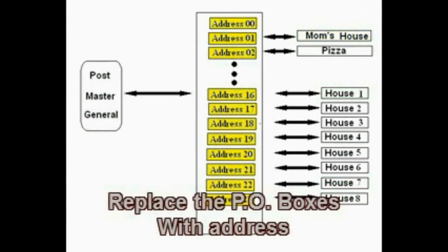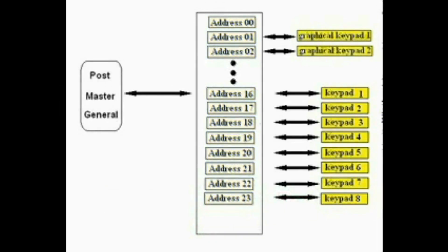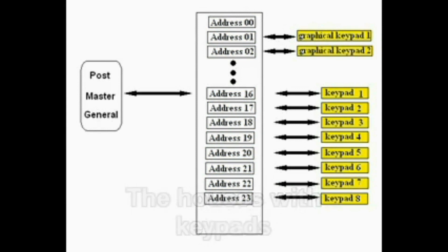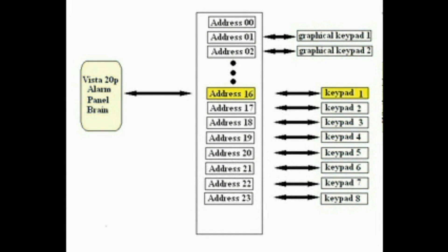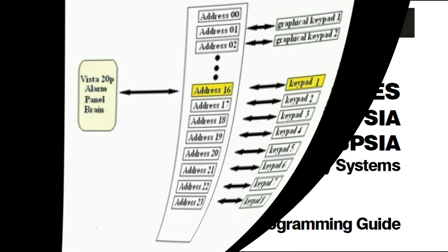Each address is a uniquely identified location in the computer's memory. Each of those addresses will have one and only one keypad writing to that location. This means the Vista 20 can determine exactly which keypad sent it a message. It also works the other way around — the keypad monitors its address, and when the Vista 20 sends something to that address, the keypad knows it's being talked to. So as a programmer, how do you know which address goes with which keypad?